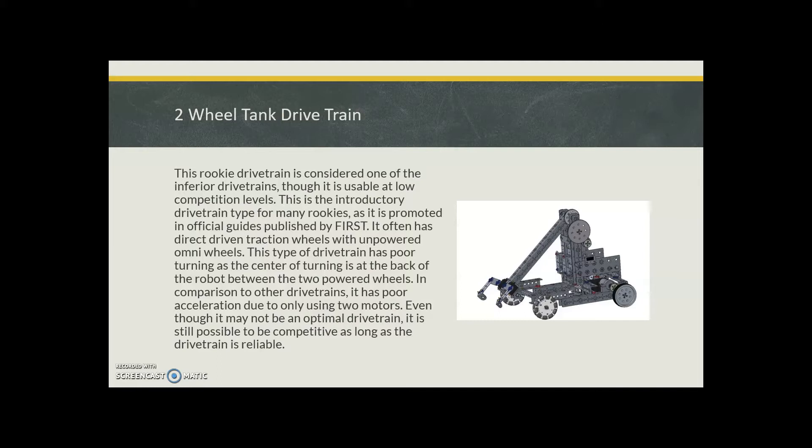It often has direct driven traction wheels with unpowered omni wheels. This type of drive train has poor turning because the center of turning is in the back of the robot between the two powered wheels. In comparison to other drive trains, it has poor acceleration due to only using two motors.